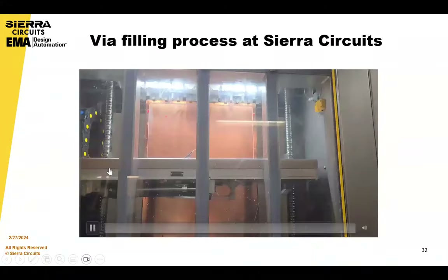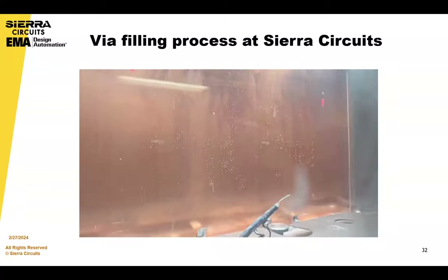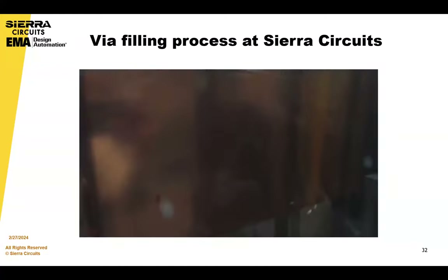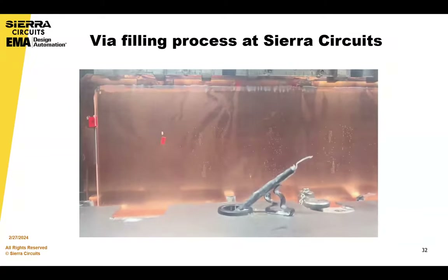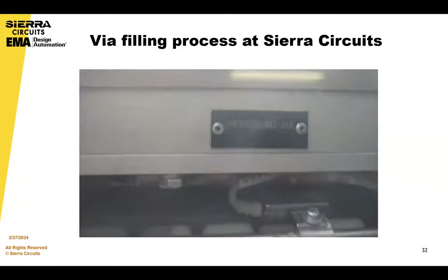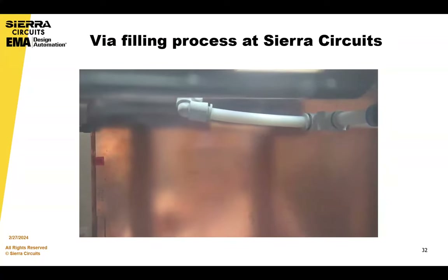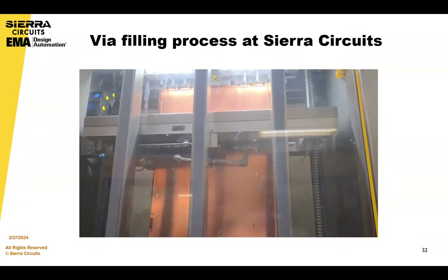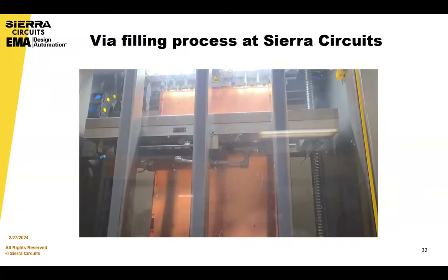Here's a quick shot of our VIA fill tank. We hold the panel vertically, and whatever VIAs you want filled have been drilled and plated. The other VIAs have not gone through that process. This squeegee machine basically pushes the non-conductive epoxy paste into the open VIAs. After that, we bake and then sand down or planarize to get the smooth surface again. This process is a very normal process — we use it all the time for the boards we're assembling.